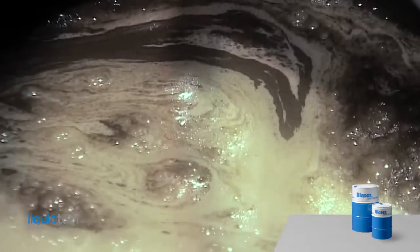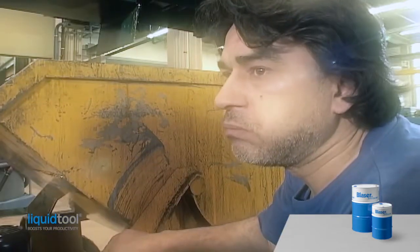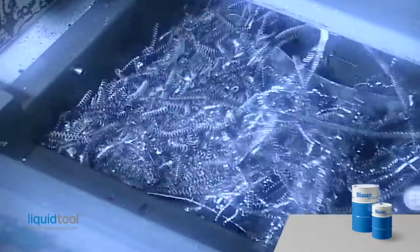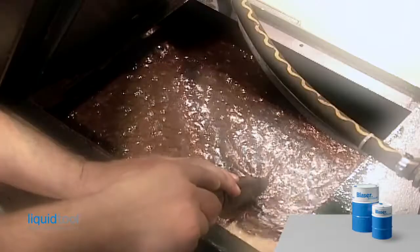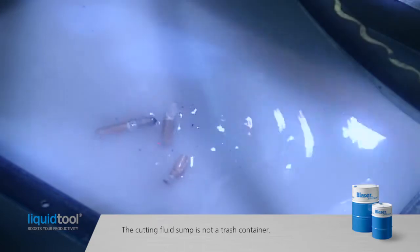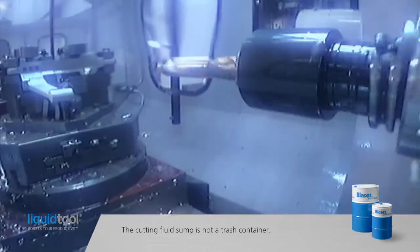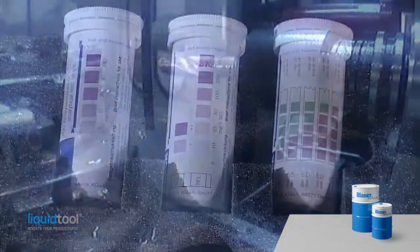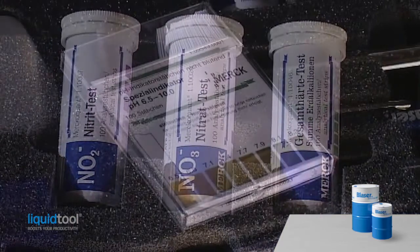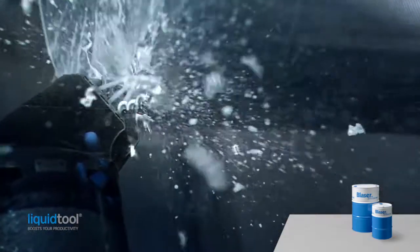Emulsions also have to be checked for appearance and smell to detect changes early. Emulsion maintenance includes removing chips, sludge, and tramp oil. The cutting fluid sump is not a trash container. Correct maintenance ensures a long sump life as well as consistently high cutting performance and surface quality.